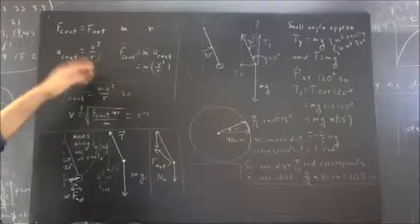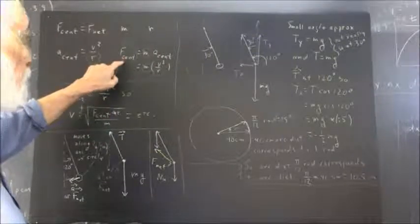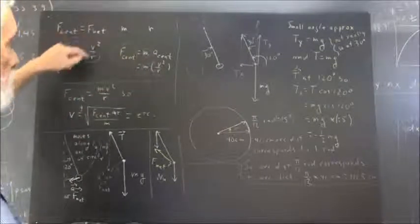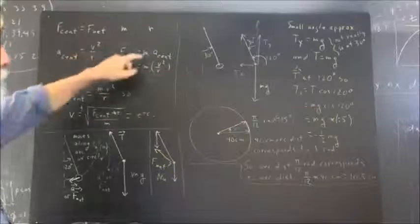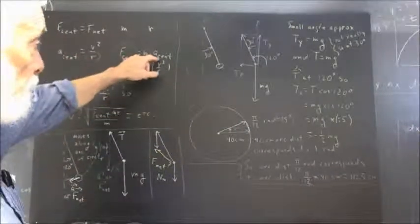To get a force, you multiply mass by acceleration. So, the centripetal force on a mass M moving at velocity V on a circle of radius R is mass times the centripetal acceleration, which is M times V squared over R.